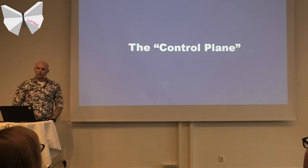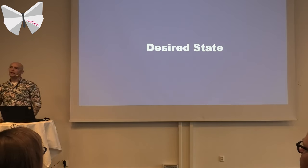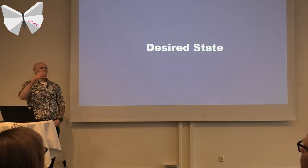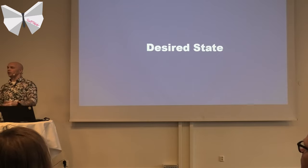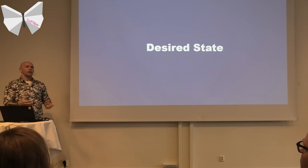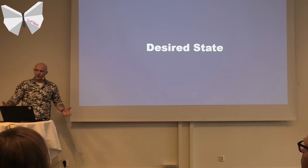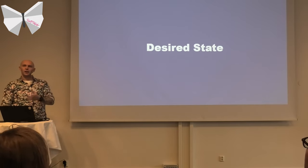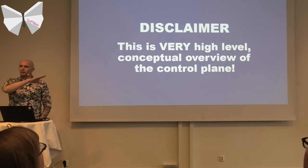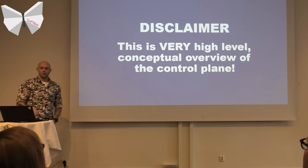Before looking at what the control plane does, we need to understand the idea of desired state. We do not tell the control plane what to do — we don't say 'spin up machines, run containers, do X, do Y.' We go to the control plane and say 'this is what I want my cluster to look like,' and then Kubernetes sorts it out. Desired state is really important as compared to imperative commands.